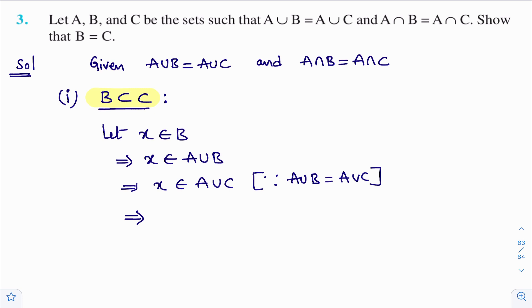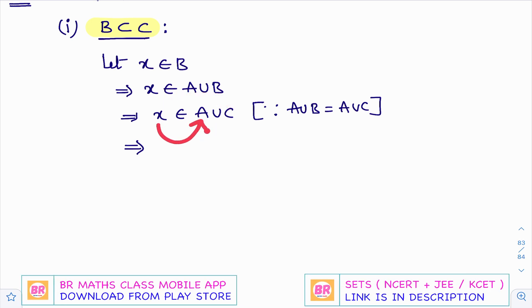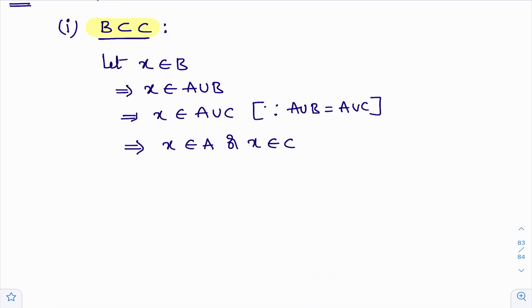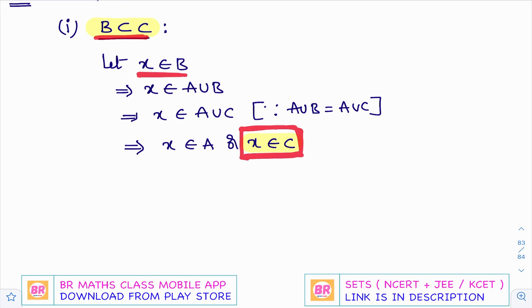X belongs to A union C means X is in set A or X is in set C — two chances are there. X may be in set A, or in set C, or in both. The basic thing is X belongs to A or X belongs to C. If X is in set C, this problem is over, because I can directly say that B is a subset of C.